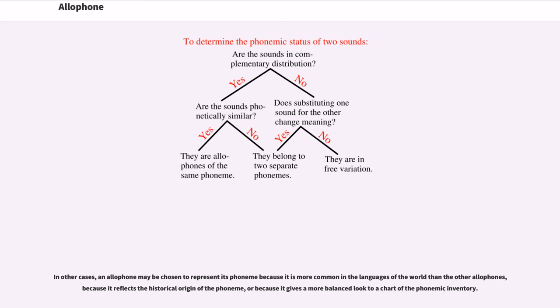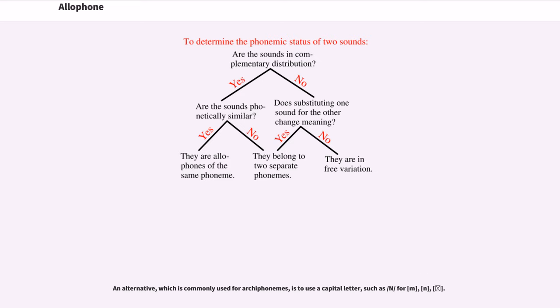In other cases, an allophone may be chosen to represent its phoneme because it is more common in the languages of the world than the other allophones, because it reflects the historical origin of the phoneme, or because it gives a more balanced look to a chart of the phonemic inventory.